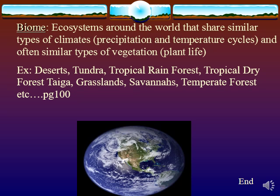Finally we get to biomes. Biomes are different ecosystems around the world that share similar types of climates — meaning the same type of average rainfall (precipitation) and temperature cycles. They'll often have similar types of vegetation, and organisms in these similar ecosystems will operate in very similar ways in terms of their niche. For example, deserts can be found on almost every continent except the polar regions, and they're all very hot and very dry. Rainforests can be found in at least three continents — Africa, South America, Central America, and Southeast Asia — and these are all similar types of ecosystems found far apart from each other with similar amounts of precipitation and temperature cycles.